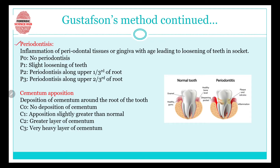The third criterion is periodontosis. Periodontosis is the inflammation of periodontal tissues, periodontal ligaments, or gingiva with age, leading to loosening of the teeth in the socket. The gums and periodontal ligaments become inflamed, causing the teeth to loosen. In the diagram, a normal tooth is shown alongside a tooth with periodontosis, where the gum area has displaced from its normal position, creating a visible gap.